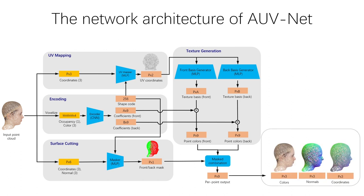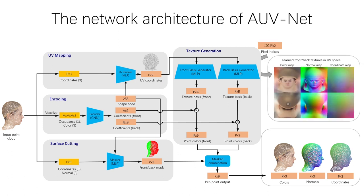Note that in addition to RGB colors, we also predict the point normals and point 3D coordinates. We can also query the generators with pixel coordinates to generate texture maps, normal maps, and coordinate maps. To train the entire system, we use reconstruction losses on the predicted properties and some regularization losses.